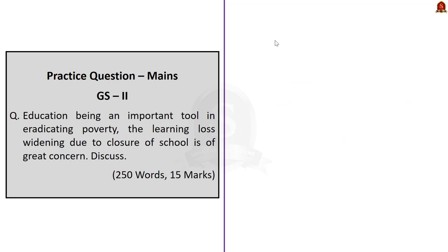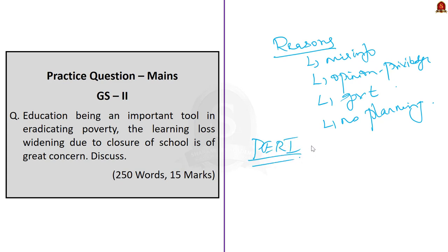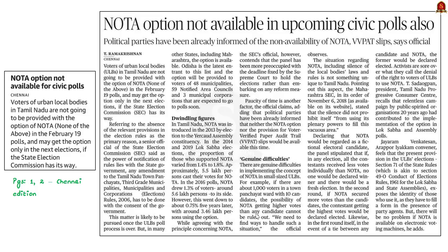In summary: reasons for continued school closure include widespread misinformation, opinions of a small section of privileged parents, delay in government response, and absence of planning to reopen schools. The PERI approach — Prepare, Engage, Reimagine, Innovate — addresses these issues. We must ensure the safety of children while ensuring their right to education from schools. This is our prime socio-political responsibility.